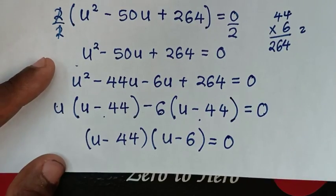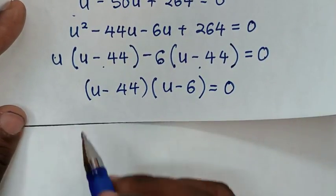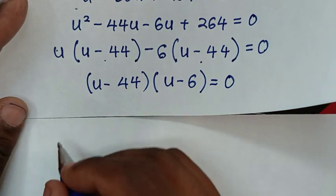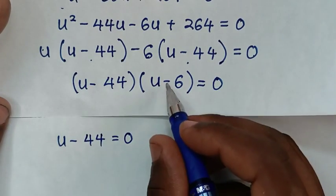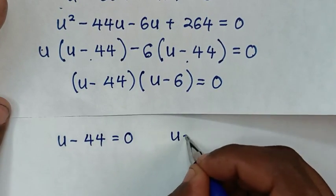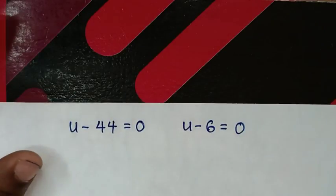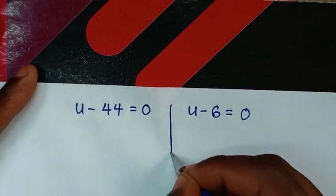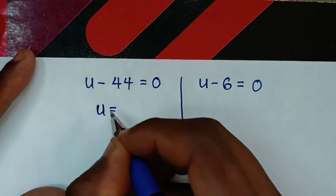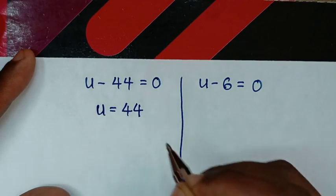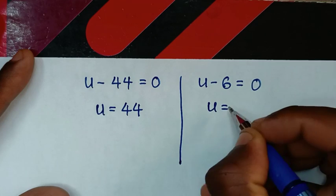From the two solutions: u − 44 = 0 gives u = 44, and u − 6 = 0 gives u = 6.